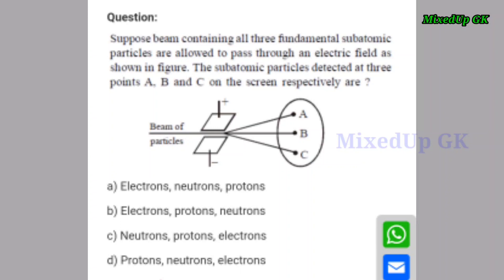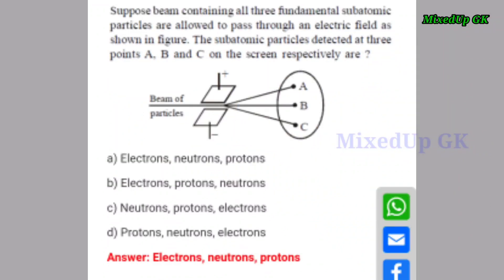Next question: a diagram shows a beam of particles A, B, and C allowed to pass through an electric field as shown in the figure. The sub-atomic particles detected at three points A, B, and C on the screen respectively are — the correct answer is option A: A is electrons, B is neutrons, and C is protons.